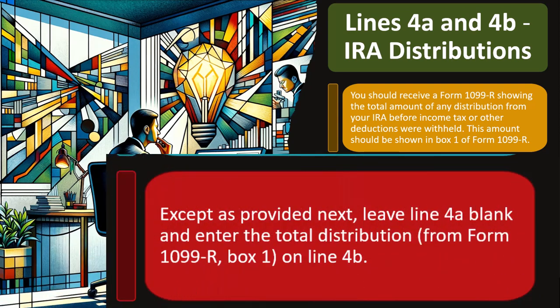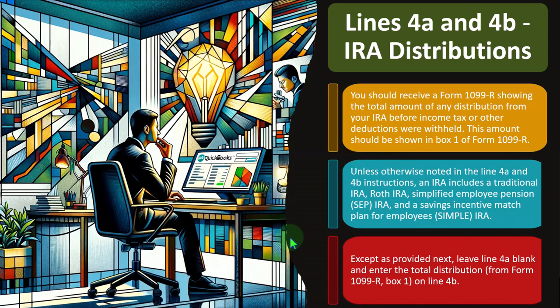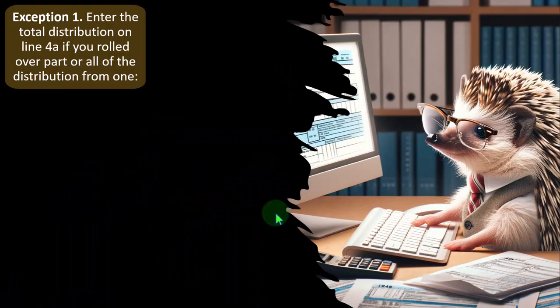As provided in the instructions: leave line 4A blank and enter the total distribution from Form 1099-R Box 1 on line 4B.